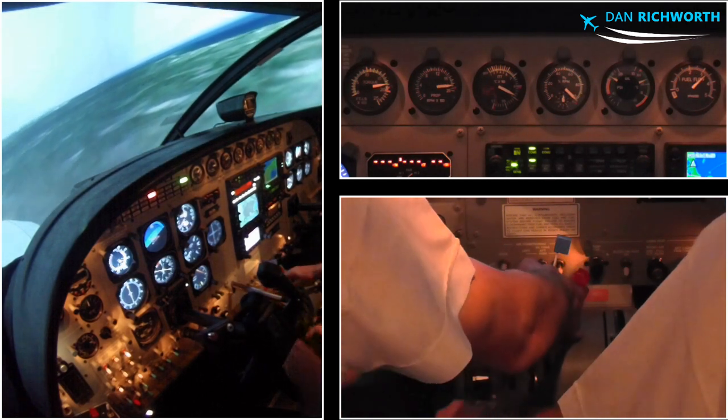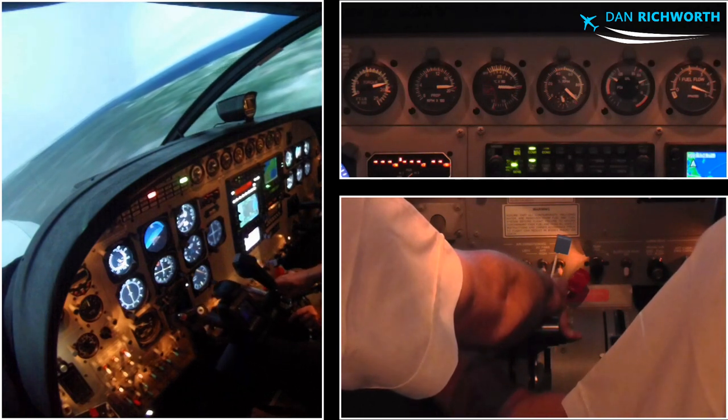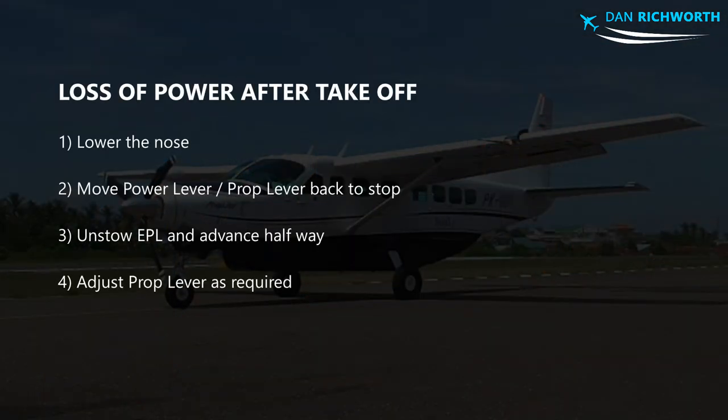Providing you've switched the ignition on prior to takeoff, if you do lose power you can recover with these four simple steps. Firstly, immediately lower the nose. Move the power lever and prop lever back to the stop — you can do this with one movement of your hand. Immediately un-stow the emergency power lever and move it about halfway forward. Adjust the prop lever as needed. As long as you already have the ignition on, these four steps will work for FCU failures, flame-outs and compressor stalls.